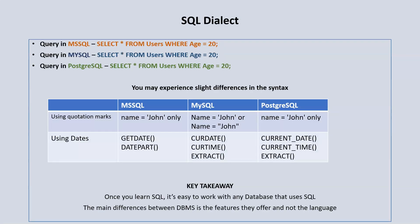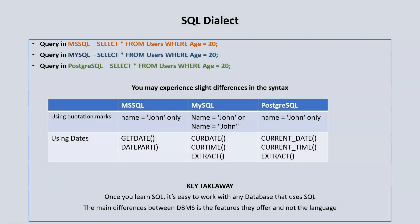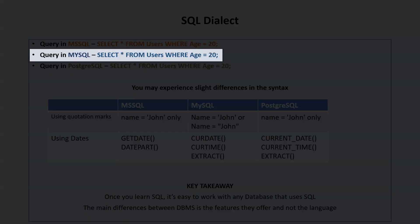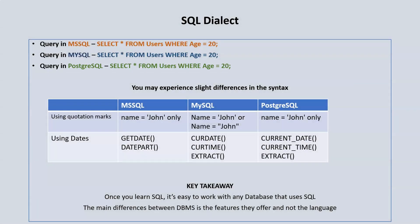To get a better understanding of the similarities and differences between the different relational database management systems, let's see how SQL is being used. Assuming we're trying to retrieve information from our database of users where the age is 20, let's see if there are any differences in the syntax. With Microsoft SQL, the syntax would be: SELECT * FROM users WHERE age = 20. In PostgreSQL, the syntax would also be SELECT * FROM users WHERE age = 20. We see that there is no difference in how to retrieve this particular information, regardless of whether we're using Microsoft SQL, MySQL, or PostgreSQL.